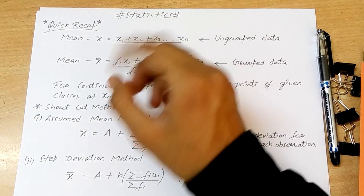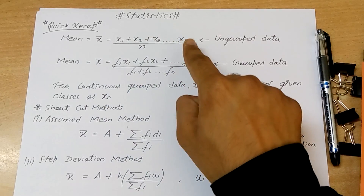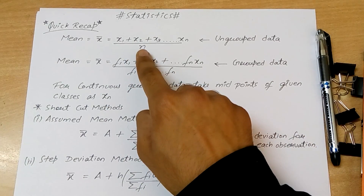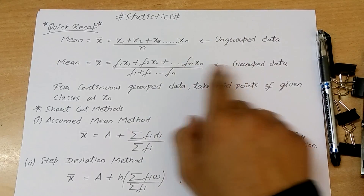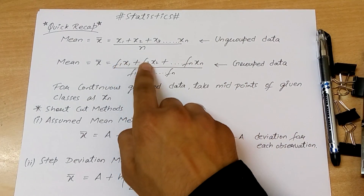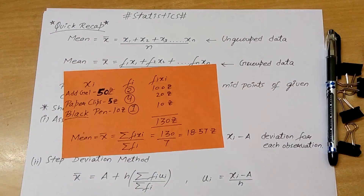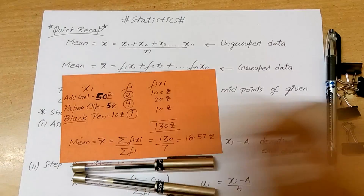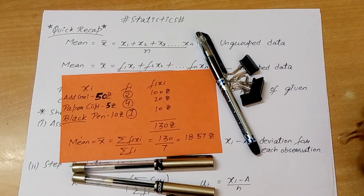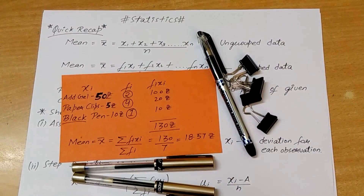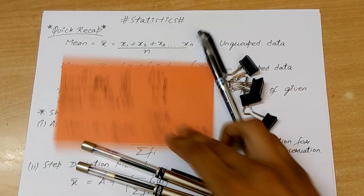In statistics, first of all we'll have a quick recap. Mean is just the sum of observations divided by the total number of observations for ungrouped data. If we have grouped data, we have to multiply each observation by their frequencies. For example, we have two HL pens for 50 rupees each, a black pen for 10 rupees, and four clips for five rupees each, so we'll have to do these calculations.